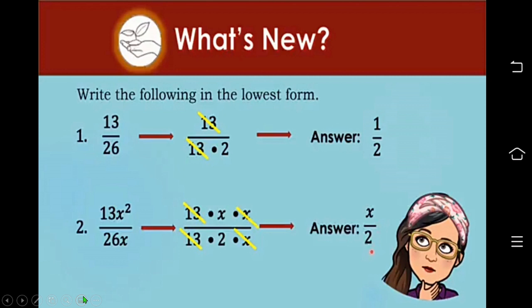We are going to practice how to express fractions in the lowest term. Just like in the previous activity, we factor out each term. Here, 13 is being factored out — since it's a prime number, it's 13 and 1. For 26, the factors are 13 and 2. We can factor out 13 in the numerator and in the denominator. What's left in the numerator is 1 and in the denominator is 2, so the answer is 1 half. For number 2, we have 13x squared over 26x. The factors of 13x squared are 13 times x times x. For 26x, that's 13 times 2 times x. We factor out the common factors 13 and x. What's left are x and 2, so the answer is x over 2.